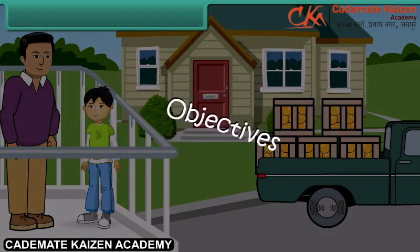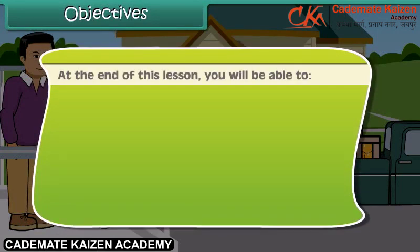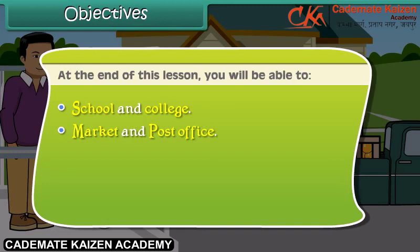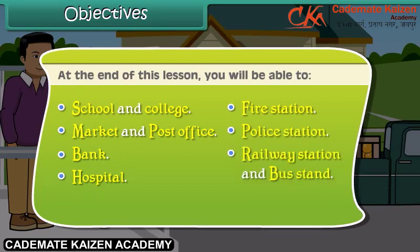Objectives: At the end of this lesson, you will be able to know about neighborhood places such as school and college, market and post office, bank, hospital, fire station, police station, railway station and bus stand.